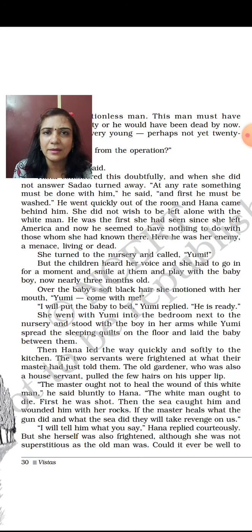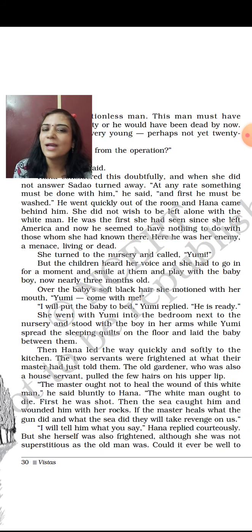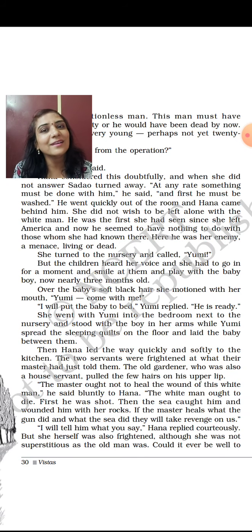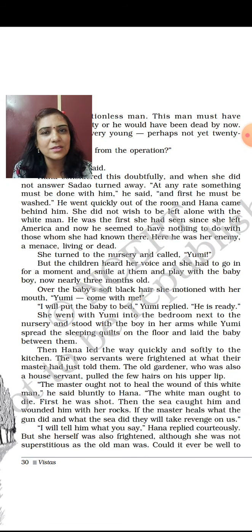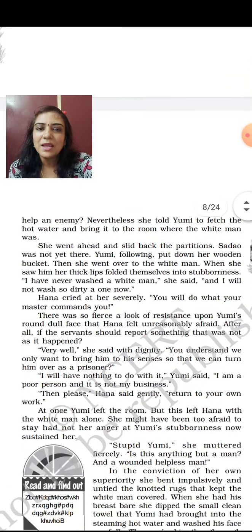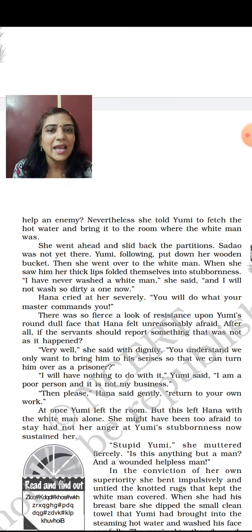'The master ought not to heal the wound of this white man,' he said bluntly to Hana. 'The white man ought to die. First he was shot, then the sea caught him and wounded him with her rocks. If the master heals what the gun did and what the sea did, they'll take revenge on us.' This shows the superstition of the common man — he believed the gun and the sea would take revenge if Sadao tried to save the man. 'I'll tell him what you say,' Hana replied courteously, but she herself was also frightened. Although she was not as superstitious as the old man, she wondered if it could ever be right to help an enemy.